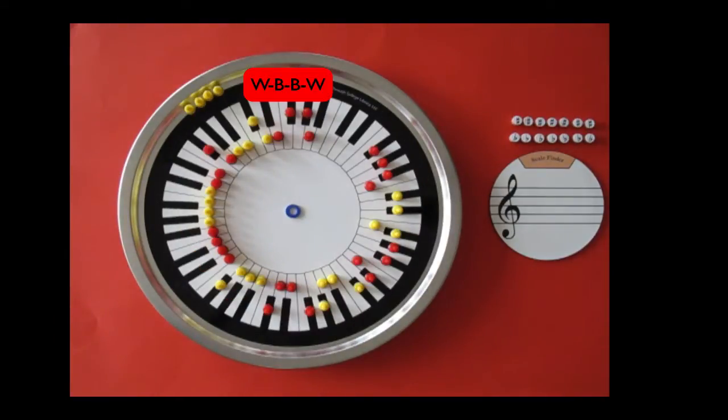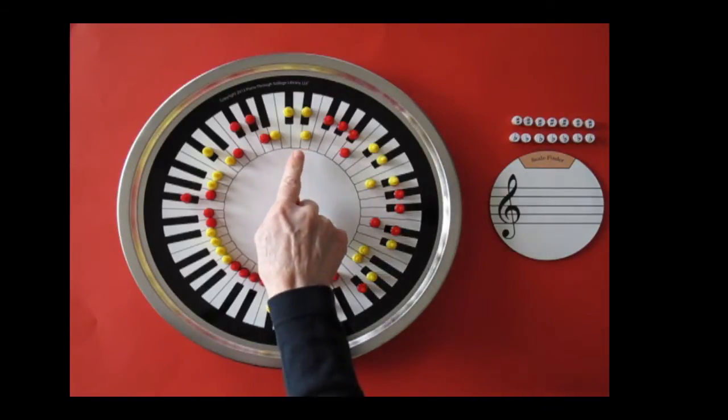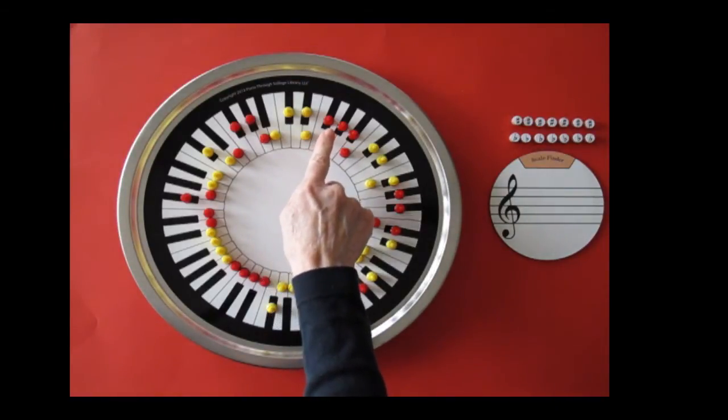And the last two, white, black, black, white. You should end up a whole-step from where you began, completing an unbroken chain of tetrachords.